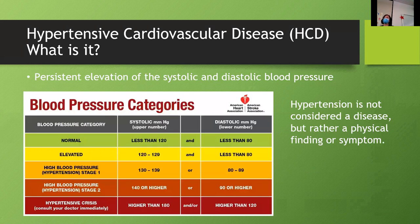Here's the chart for blood pressure categories. Hypertension is not really considered a specific disease but more a physical finding or symptom that raises a red flag for higher risk of other conditions. Sometimes they know why you have high blood pressure — it's because of another condition — but a lot of times they don't know why. As people age, they tend to have more incidence of high blood pressure.